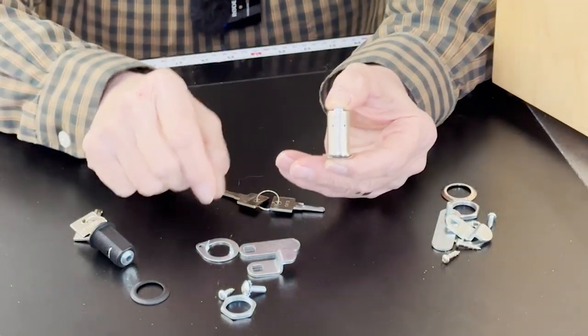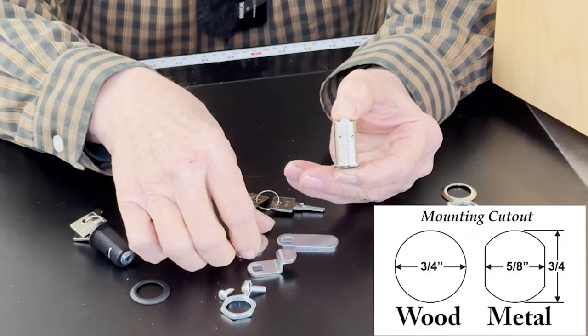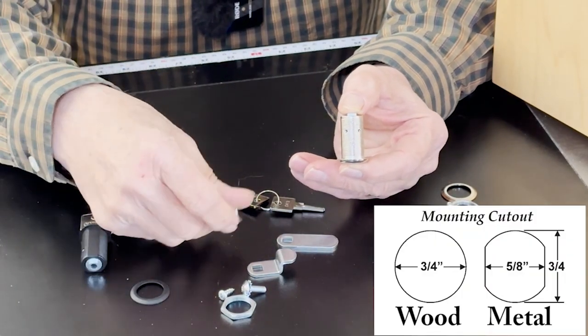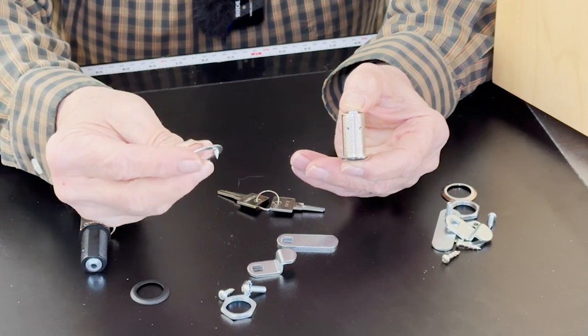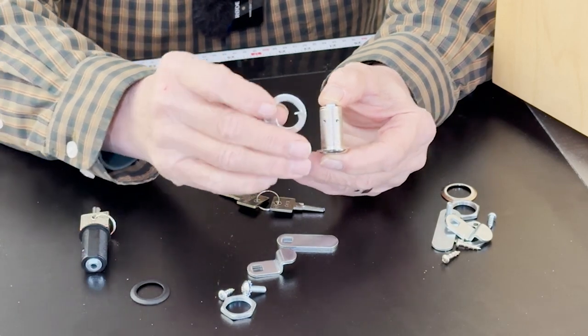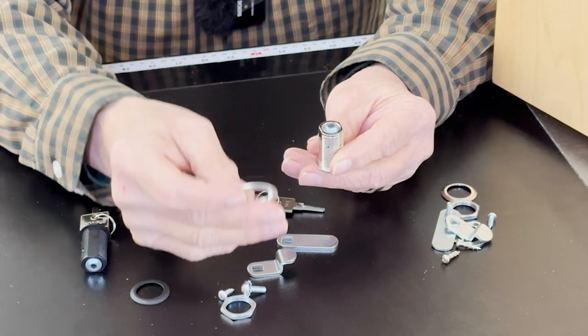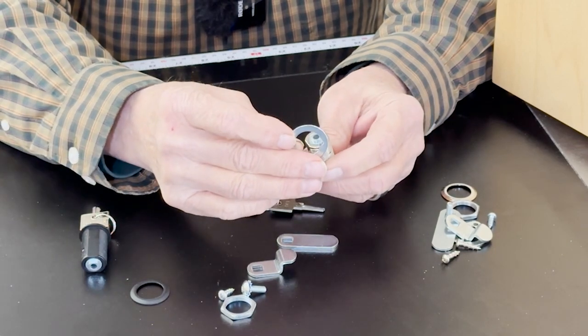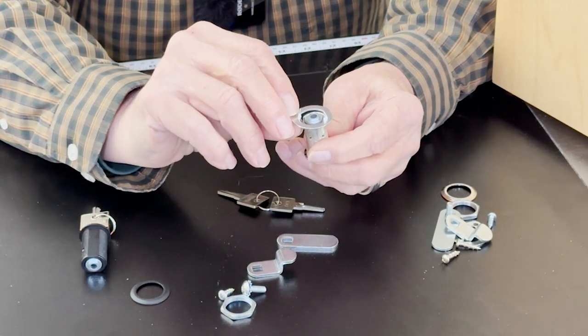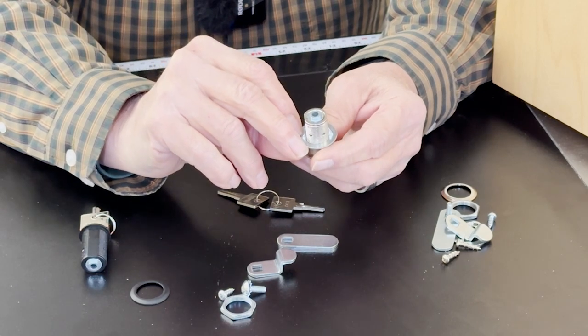But in a wood cabinet, where you have a round hole like we do here, then you need to have the spur washer to hold it in place. So that is a premium feature in my mind of the Olympus disc tumbler cam lock. Watch how this fits on here.